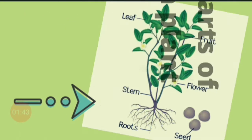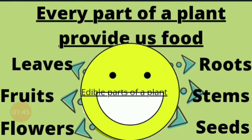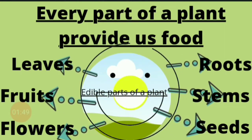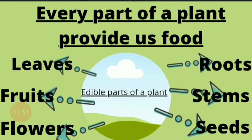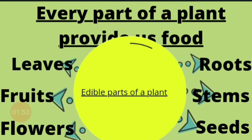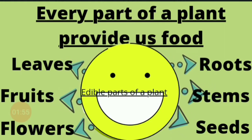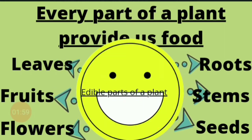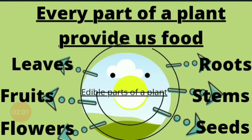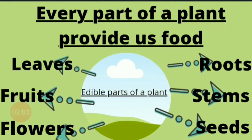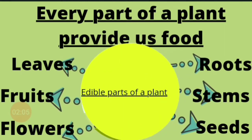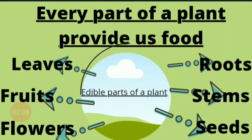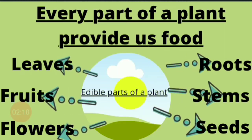Baccho, poodhe aapne khane ko in hisseo mein store karke rakhte hai. Every part of a plant provides us food, kyunki poodhe aapne food ko aapne alag-alag parts mein store karke rakhte hai. Isliye, hum paude ke alag-alag parts ko bhi khaane mein istamal karte hai — jaise leaves, fruits, flowers, roots, stems, seeds. They all are edible parts of a plant.